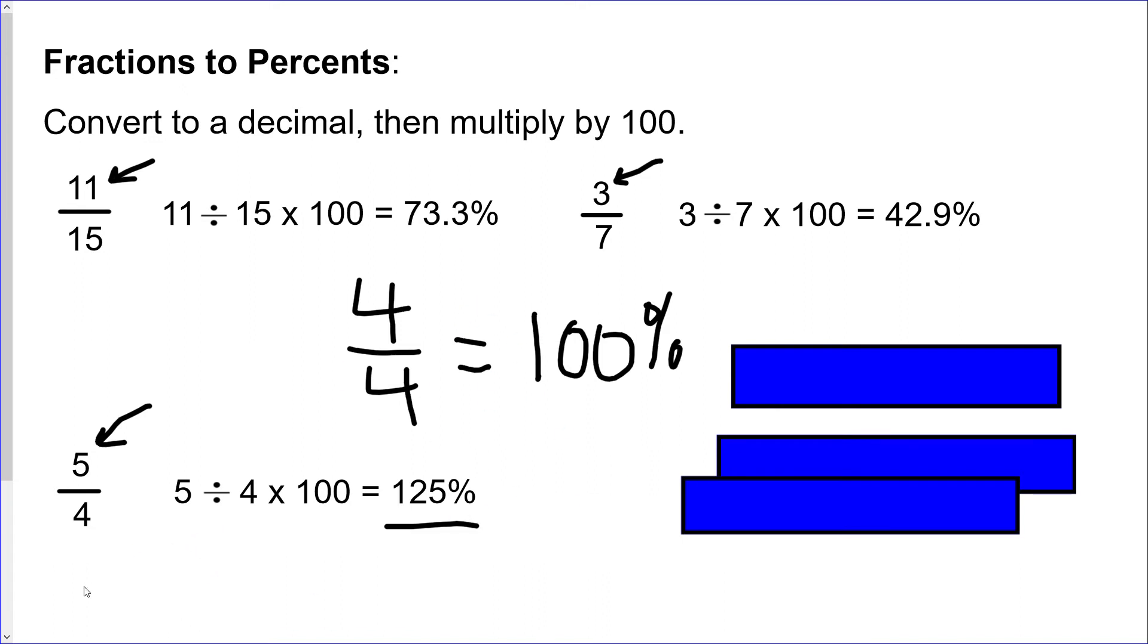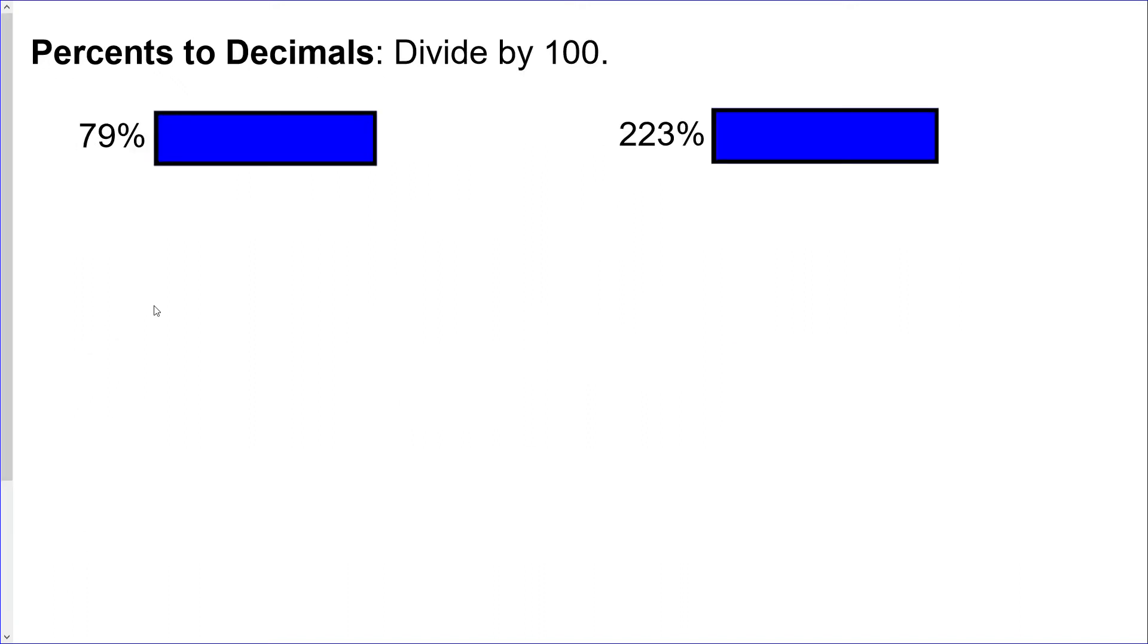Now percents to decimals, fairly straightforward, just doing the opposite of what we did before. So divide by 100. Again, you can simply divide by 100, punch that into a calculator however you'd like to do it, or if you're without one, you can just move the decimal place two to the left. Again, the opposite of what you would be doing to multiply by 100, because dividing and multiplying are opposites from each other.